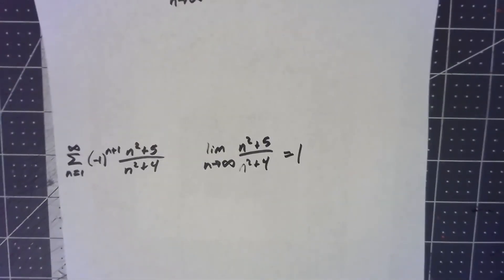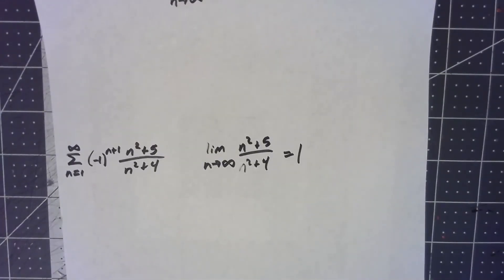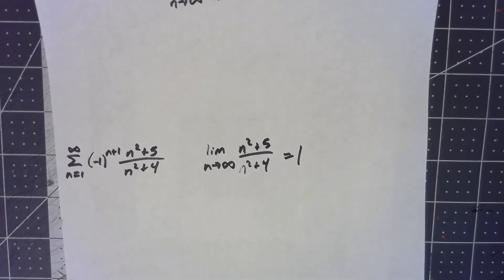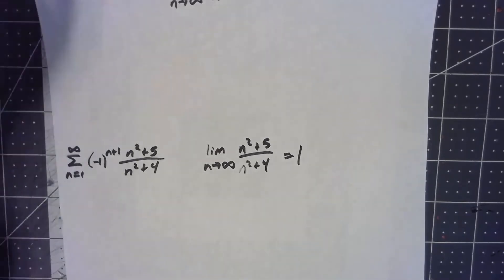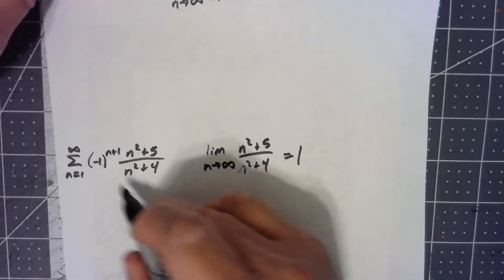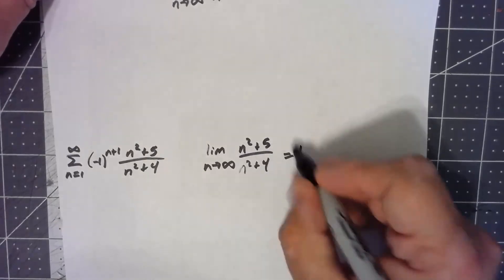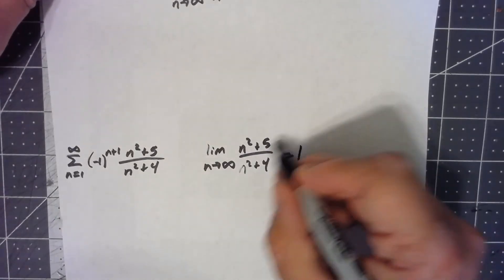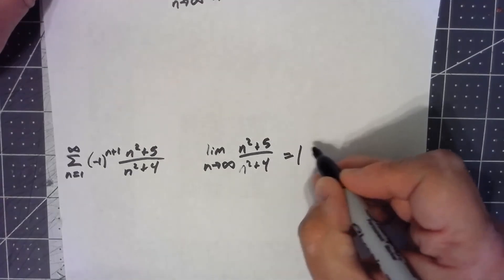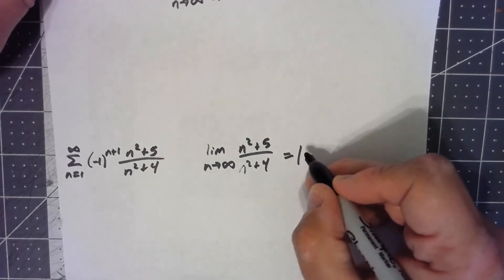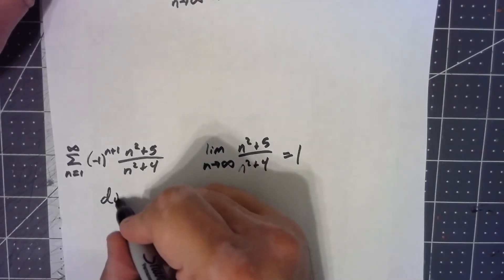As soon as that limit's one, we say, okay, the alternating series test doesn't apply, but the divergence test does. The individual terms diverge. The individual terms don't go to zero. Because the individual terms don't go to zero, that means that series diverges.